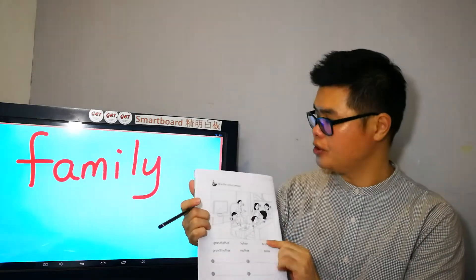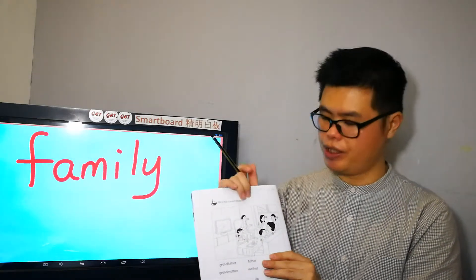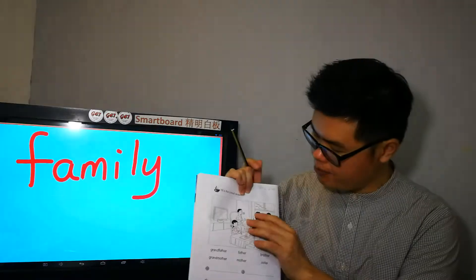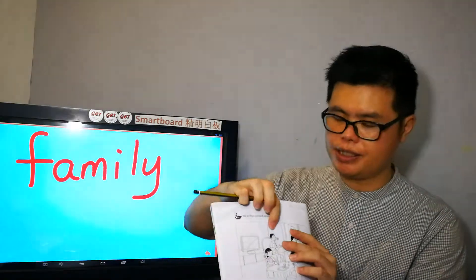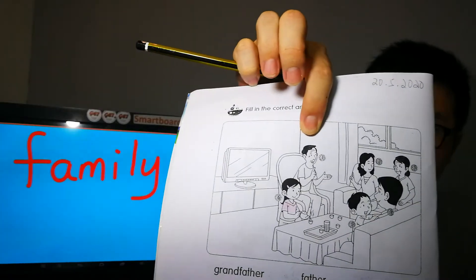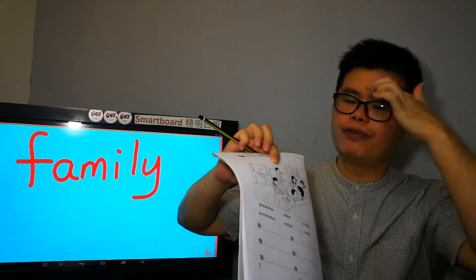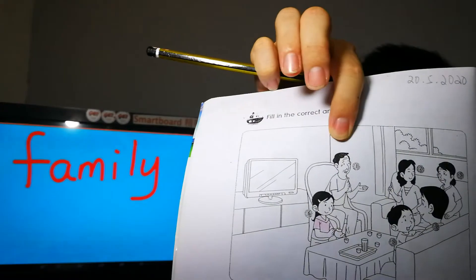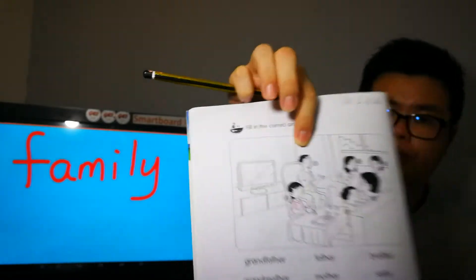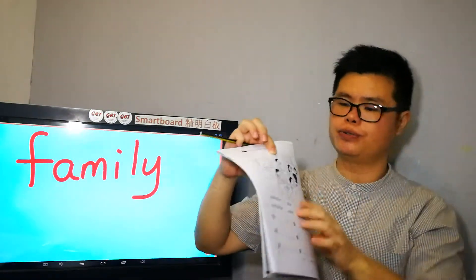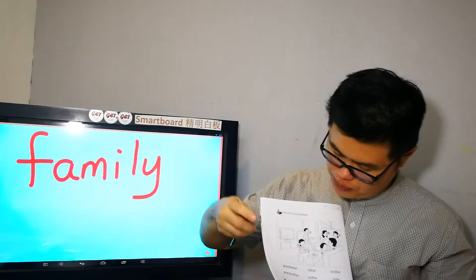So, family is our next king. Alright? For example, number one, this is grandfather. You can see? There are some lines on their forehead means they are old. Alright? They are older. Wrinkles. We call it wrinkles. So, number one is grandfather.